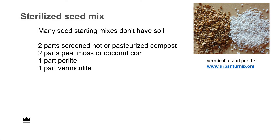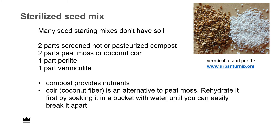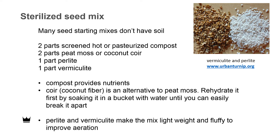A seed starting mix usually doesn't have soil. A good recipe would include two parts screened hot or pasteurized compost, two parts peat moss or coconut coir, one part perlite, and one part vermiculite. The compost provides nutrients. Coir, which is coconut fiber, is a sustainable, plentiful alternative to peat moss — it's extracted from coconut husks. Extracting peat damages fragile ecosystems and contributes to climate change, so we would like to avoid using it.